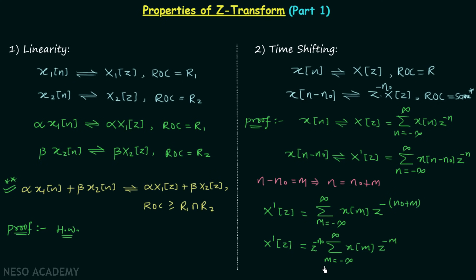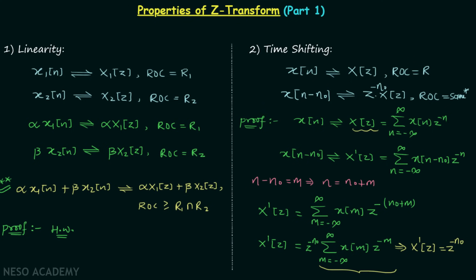Comparing this with the original definition — where we simply replace the dummy variable n by m — we see that the summation is exactly X(z). So the new Z-transform equals z^(−n0)·X(z), which proves the time shifting property. To remember it easily: take the amount of shifting n0 with its sign, place it as the power of z, and multiply by the original Z-transform X(z).